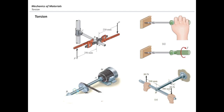Assume that there is a motor which is supposed to transfer the power generated from the motor to somewhere else. The power generated in the motor is transferred to a belt by this shaft. Generally, torsional elements are used for transmitting power from one point to another.